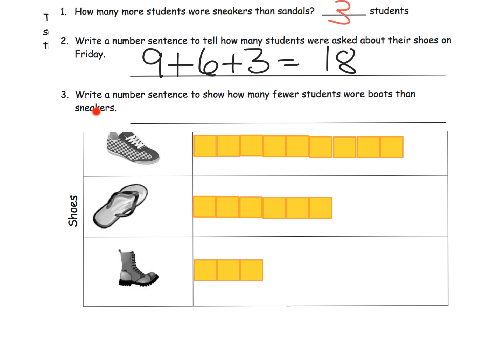Let's wrap up this last question. Write a number sentence to show how many fewer students wore boots than sneakers. We have a couple of choices. One choice is nine minus three, which equals six. That's one way to do it. Or we can use it as an addition problem with a missing addend. We could say three plus what equals nine? And the answer would be six. So we have some choices here, and give your students a chance to think about those choices.